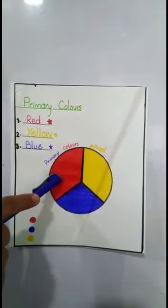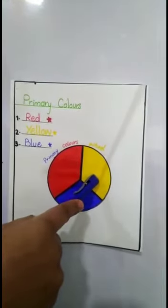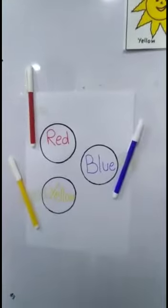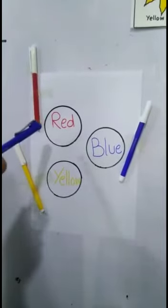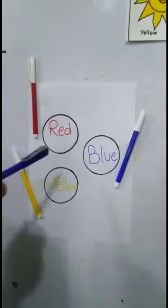One part is red, second part is yellow, third part is blue. Students, always remember: color each circle with one primary color. Red, blue, yellow.